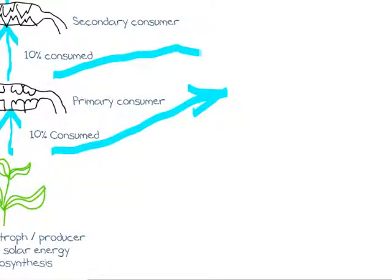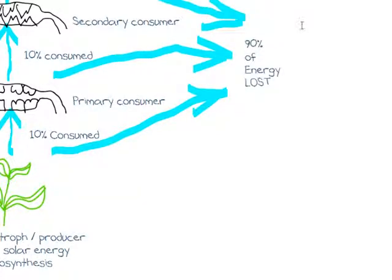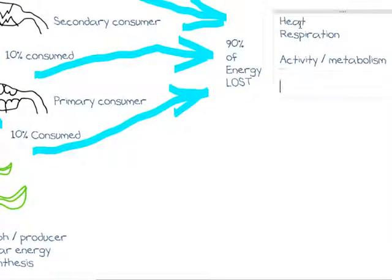The main energy losses are heat during respiration, activity, metabolism, through excretion, and we don't eat all of our food organisms. There are usually non-eaten parts.